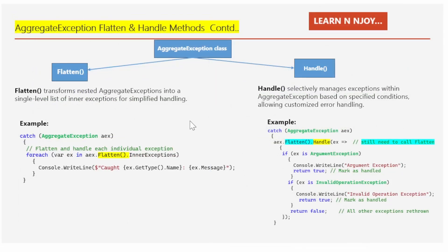Now let's talk about the Flatten and Handle methods. The AggregateException class provides two useful methods. The Flatten method transforms nested aggregate exceptions into a single-level list of inner exceptions, making them easier to handle. The Handle method allows for customized exception handling based on specific conditions. Let's understand them with examples.